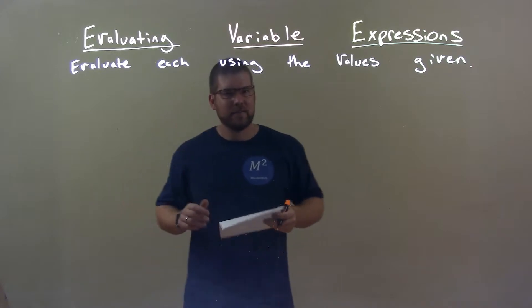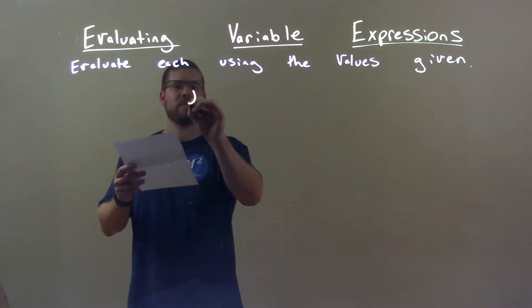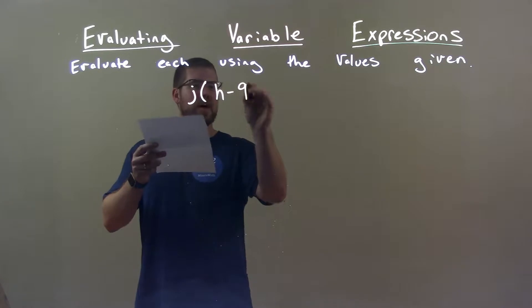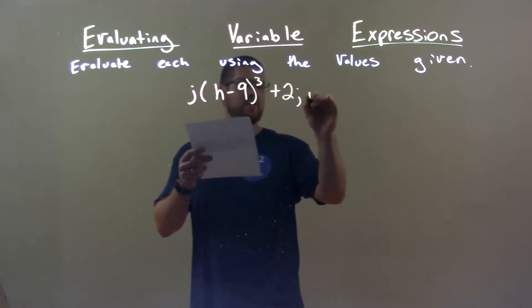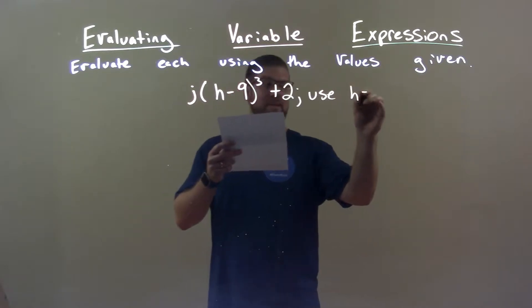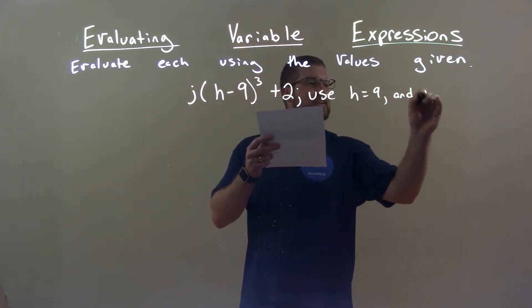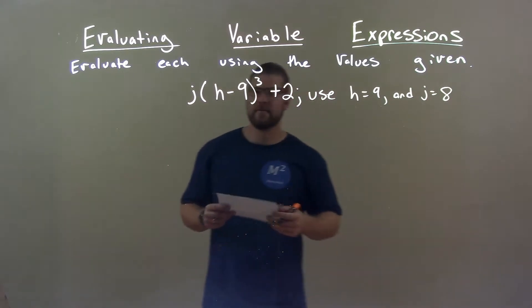We're going to evaluate each using the values given. If I was given this expression, j times h minus 9 to the third plus 2, and we use h equals 9 and j equals 8.